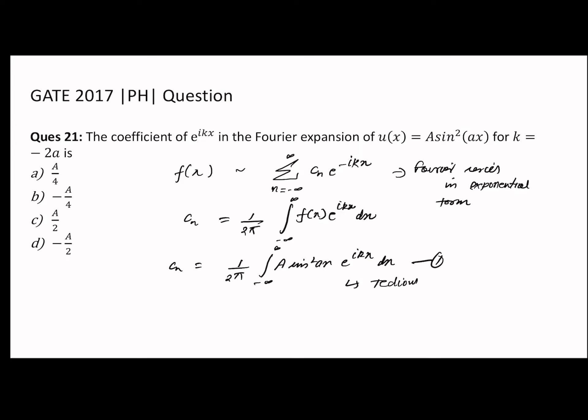We know that u(x) = A sin²(ax), and sin x equals (e^(iax) - e^(-iax))/(2i). This is the identity, so we can use this identity in the equation.